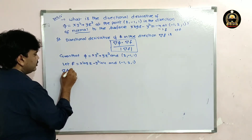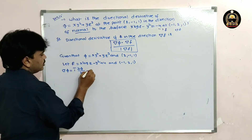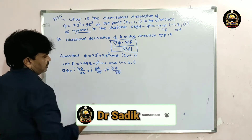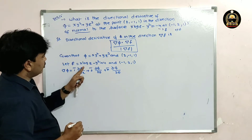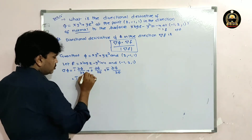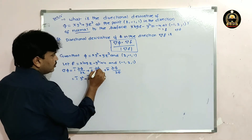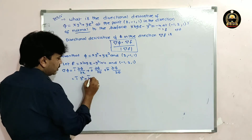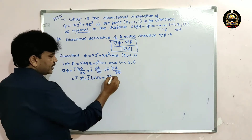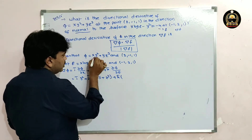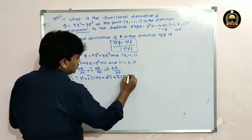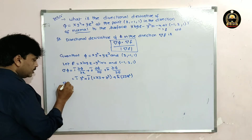Now finding del phi. Del phi = i·(∂phi/∂x) + j·(∂phi/∂y) + k·(∂phi/∂z). The derivative with respect to x gives y²; with respect to y gives 2xy + z³; with respect to z gives 3yz². So del phi = i·y² + j·(2xy + z³) + k·3yz².